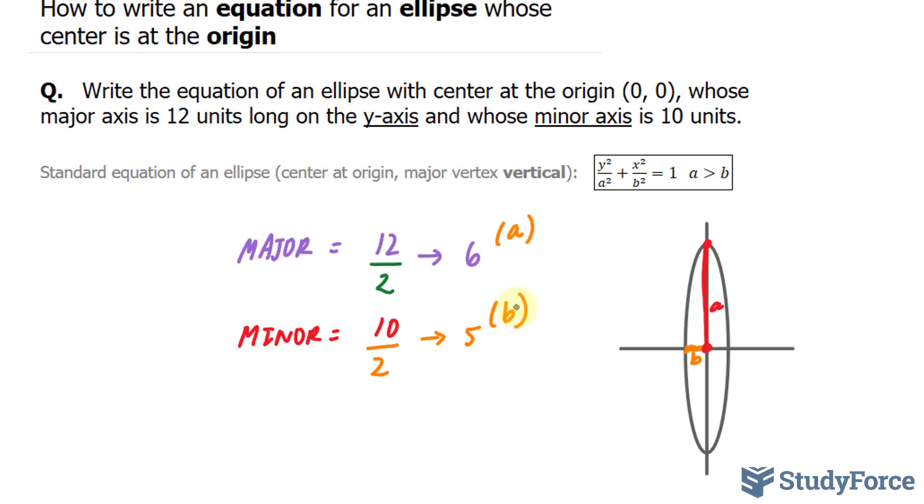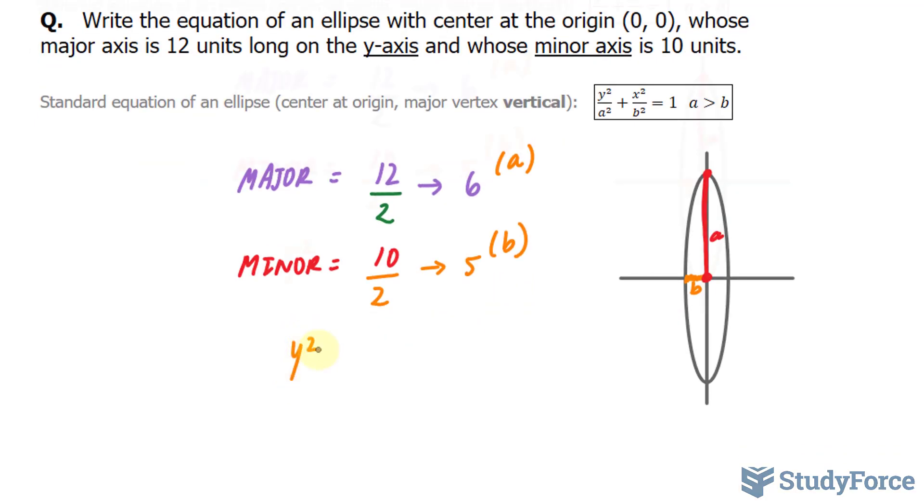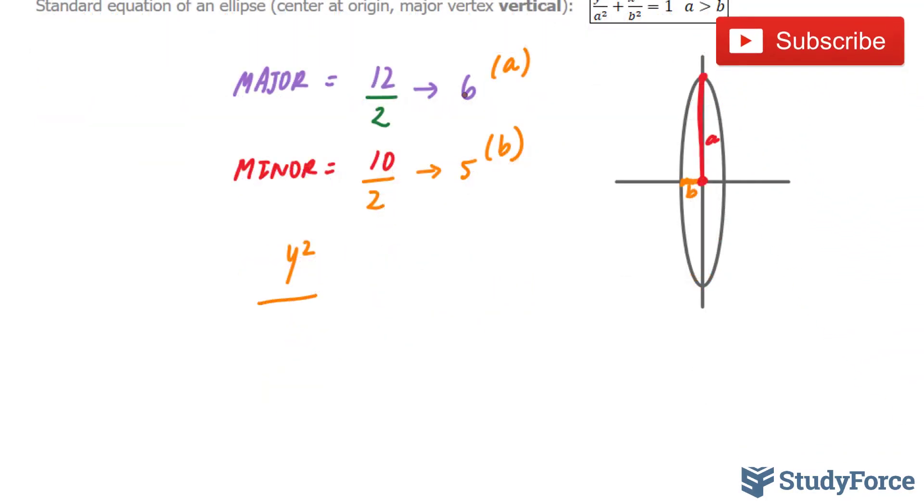Next, what I'll do is substitute these values into my formula, where I end up with y² over 6² is 36, plus x² over 5² is 25, equals 1.